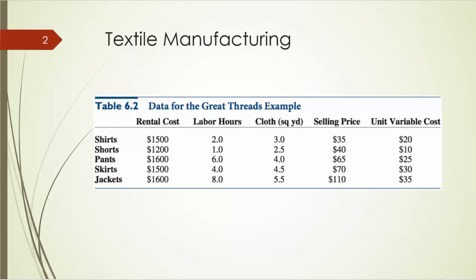In this table, we have the data for our Great Threads example. There are five products, from shirts to jackets. The information contained in this table includes rental cost for machinery, labor hours per unit of product, square yards of cloth per unit of product, selling price, and unit variable cost.